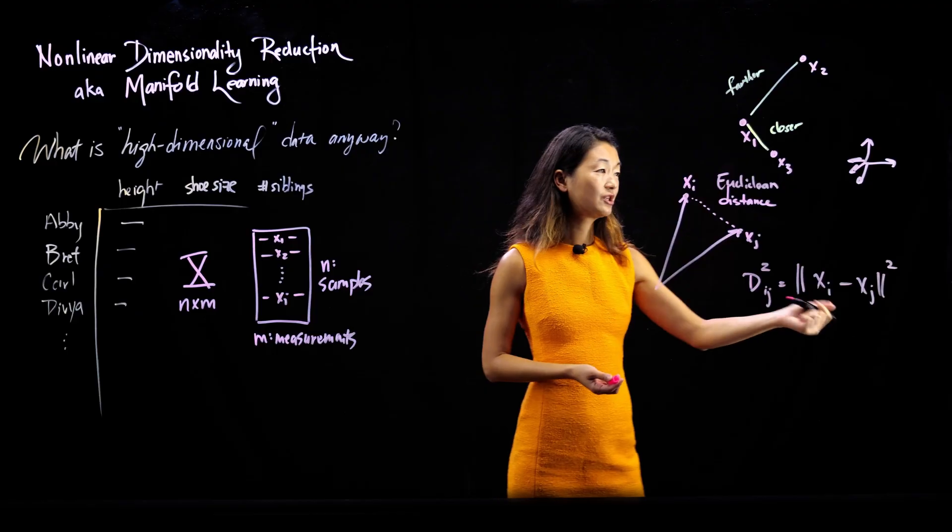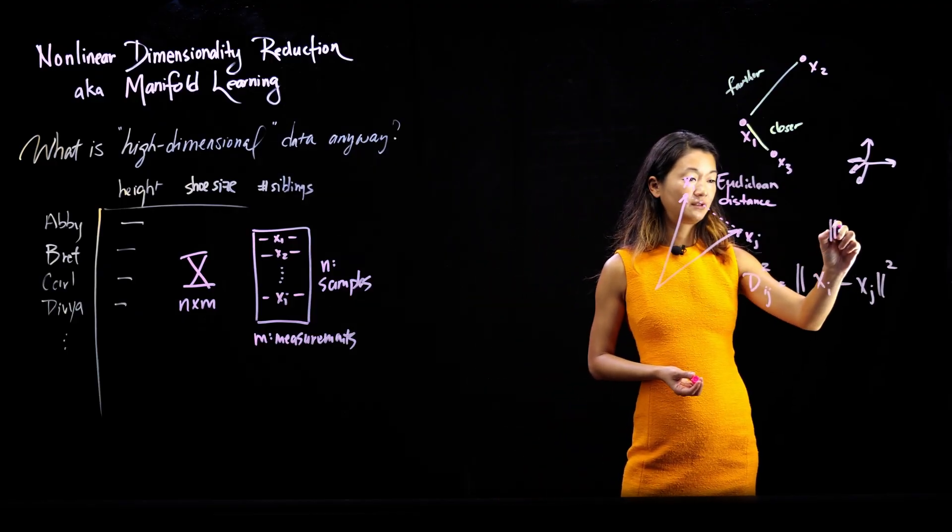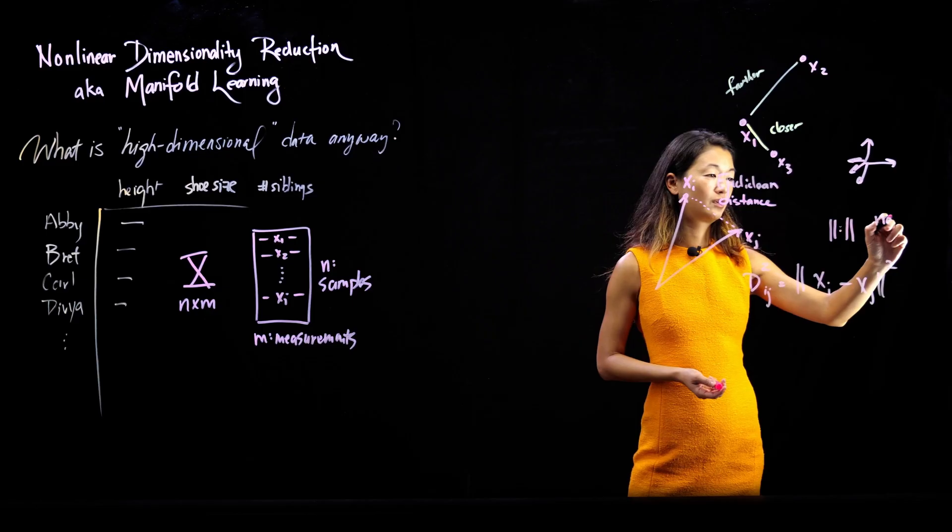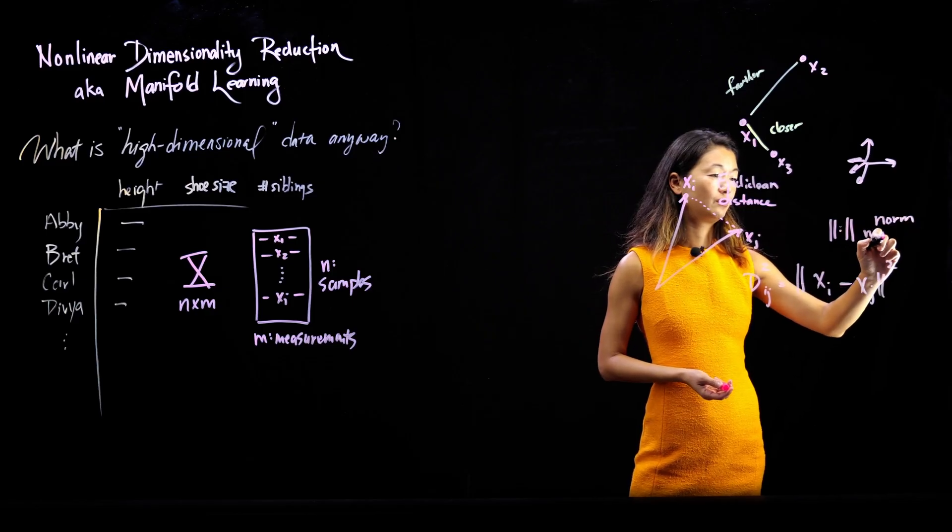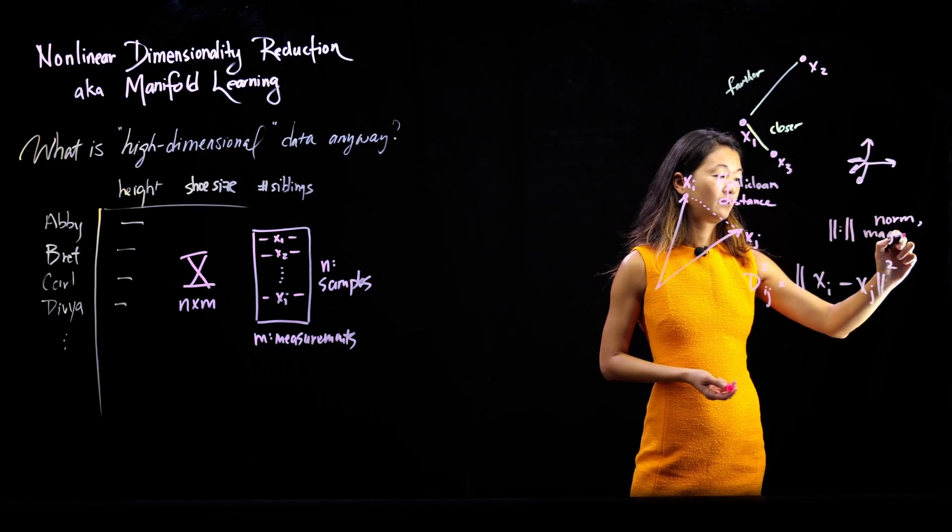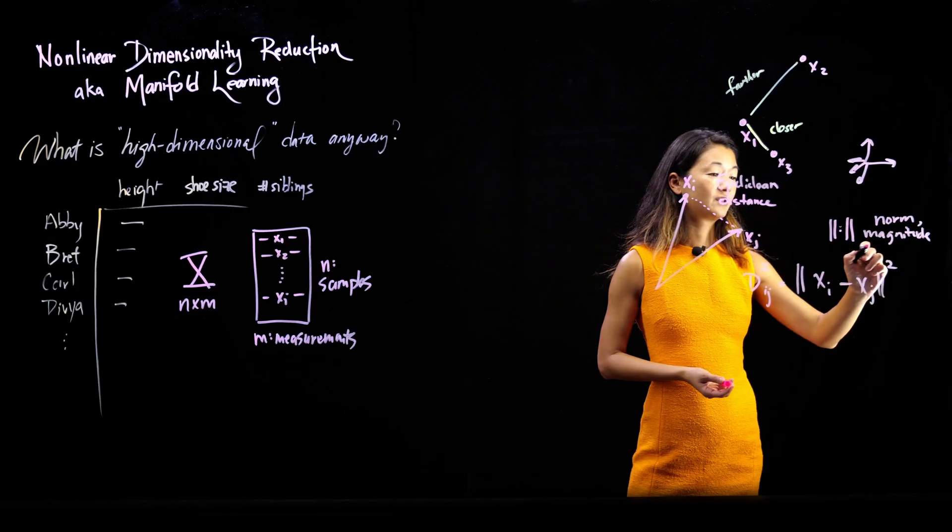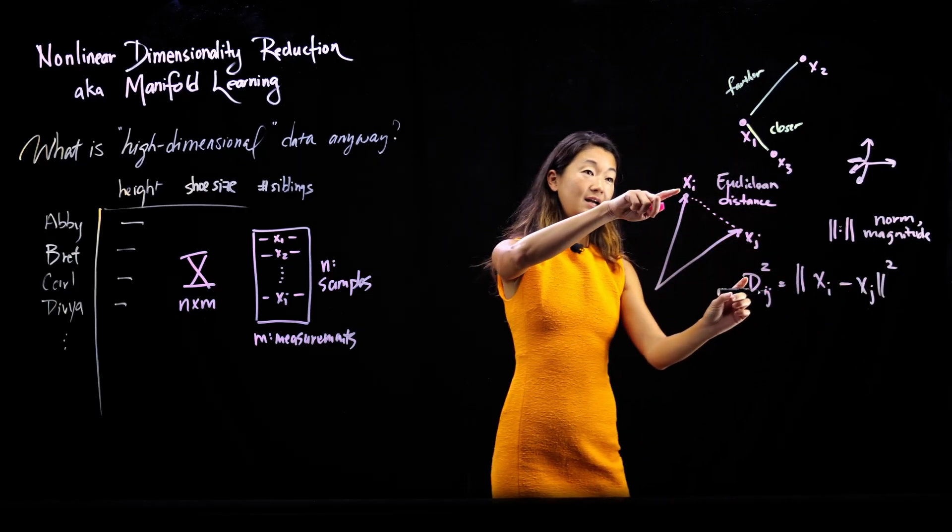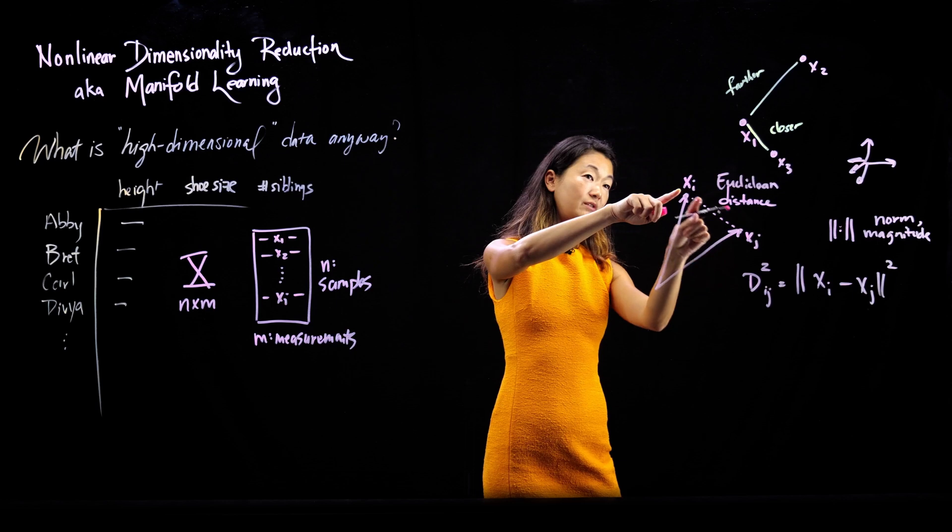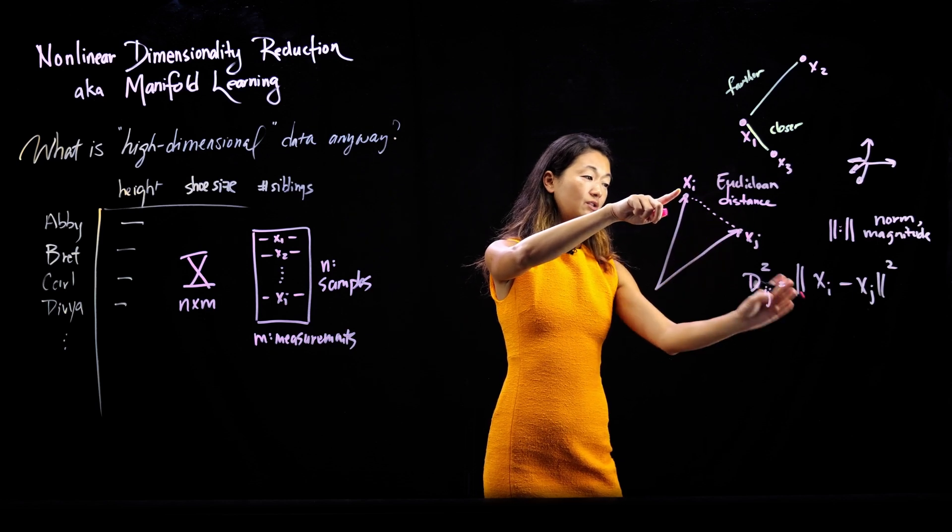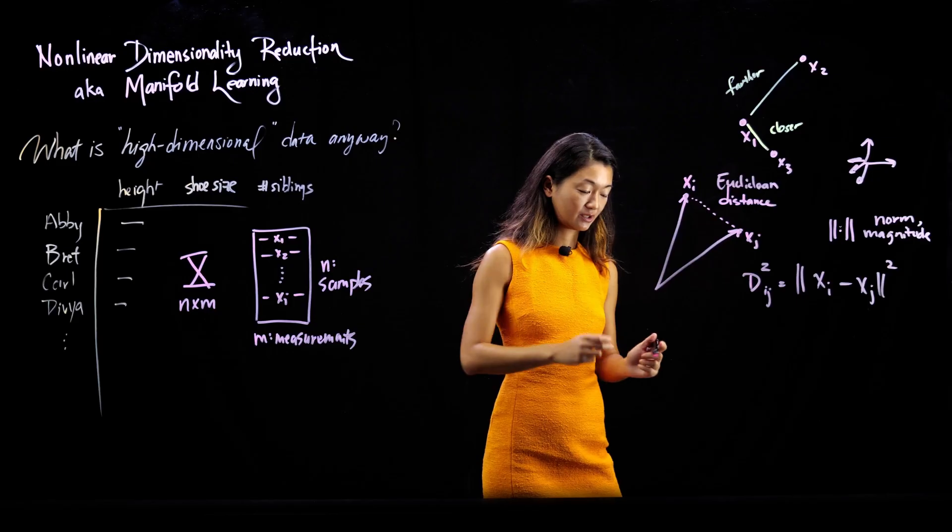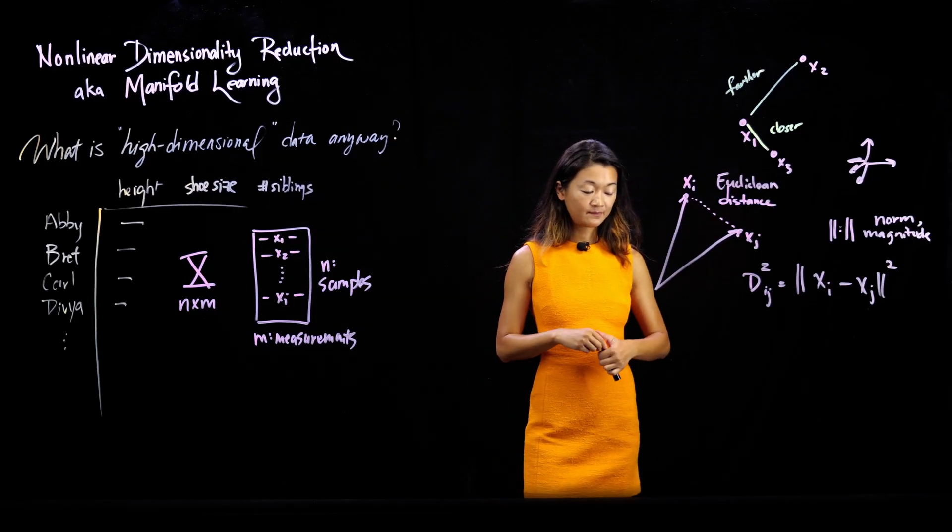Now this double bar notation is just a shorthand for vector norm. So this is the norm or the magnitude of this vector. Whatever is inside, I'm just taking the norm of this vector. So xi minus xj gives me this vector right here that I've drawn as a dotted line. And so this notation just means whatever the distance, the length and the magnitude of that vector is, that is the distance I want.